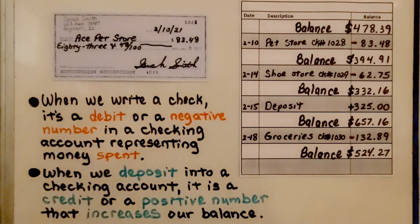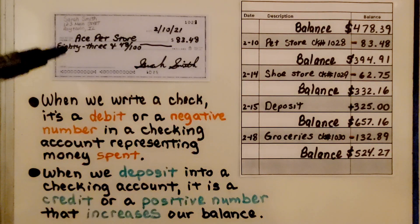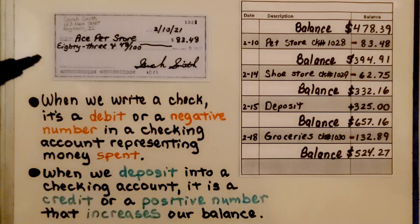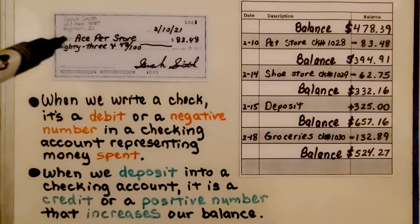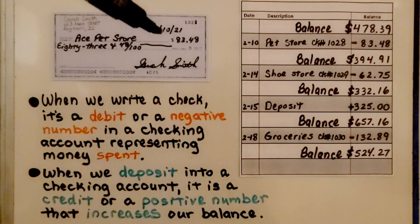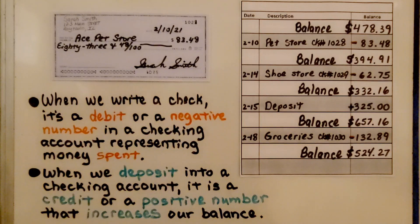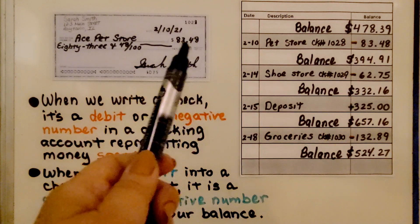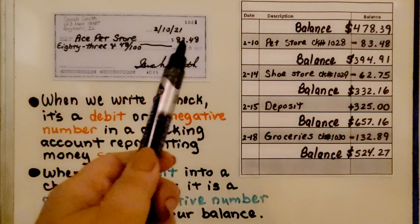When we write a check, it's a debit or a negative number in a checking account representing money spent. When we deposit into a checking account, it's a credit or a positive number that increases our balance. Here we have a check — it's made out to Ace Pet Store, dated February 10th, 2021, for $83.48.